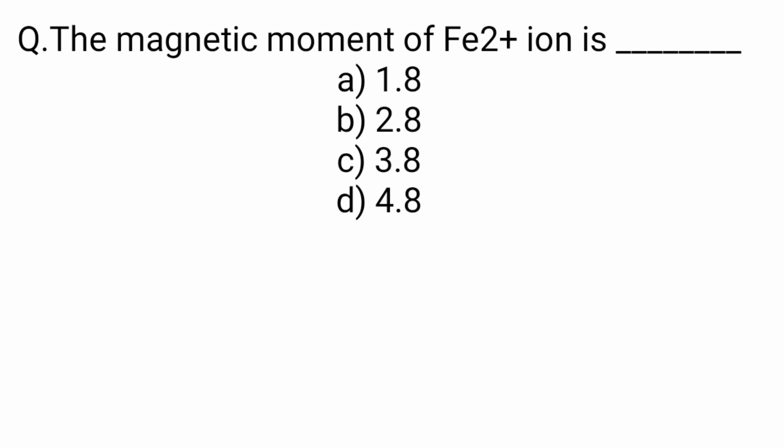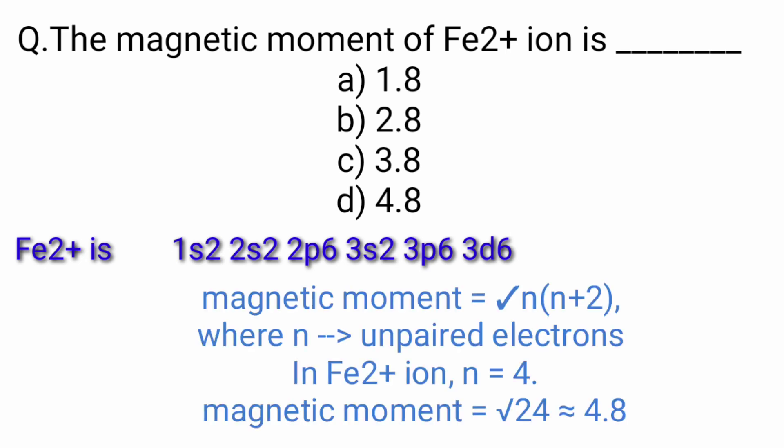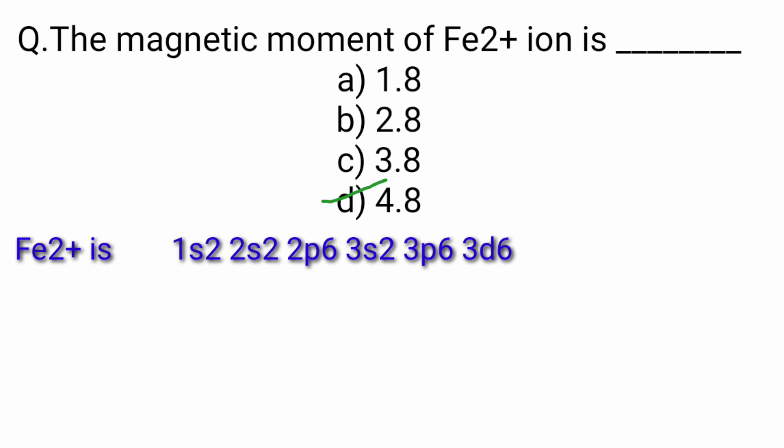Next is, the magnetic moment of Fe2+ ion is. So as we know, magnetic moment we have square root n times n plus 2. This is the electronic configuration of Fe2+ ion. So here we have number of unpaired electrons. In 3d6, there are 4 unpaired electrons. So n value is 4. Here we put value. So the magnetic moment we have square root 24. That is approximately equal to 4.8. So the right option is option d.